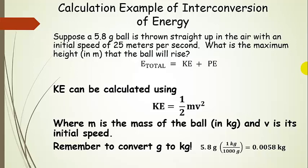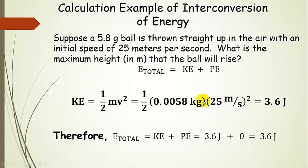Now it's time to do the calculations. We calculate the kinetic energy using the equation KE = ½mv², where m is the mass in kilograms and v is its initial speed. Remember to convert grams to kilograms. Plugging in: mass of the ball in kilograms, initial speed in meters per second, squared — don't forget that. You get 3.6 joules, because a kilogram·meter² per second² is a joule. So the total energy equals kinetic energy plus zero potential energy, giving us a total energy of 3.6 joules.